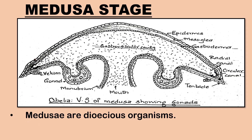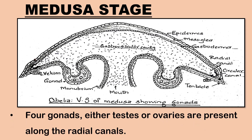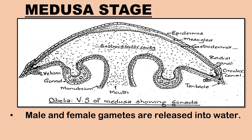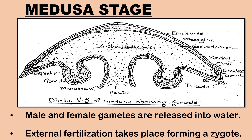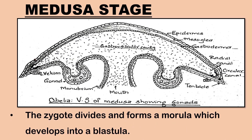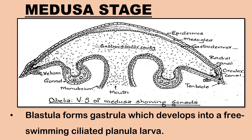Medusae are unisexual or dioecious organisms showing separate male and female individuals. Four gonads are present along the radial canals; they are either testes in males or ovaries in females. The medusa produces gametes: male individuals release sperms and females release eggs into water. External fertilization takes place forming a zygote. The zygote divides repeatedly to form a solid ball of cells called a morula, which develops into a blastula with an internal cavity called the blastocoel.